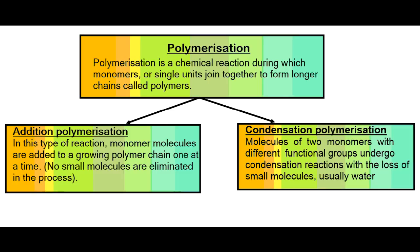There are two types of polymerization: addition polymerization and condensation polymerization. In addition polymerization, monomer molecules — for example ethene — are added in a growing polymer chain one at a time and no small molecules are eliminated in the process. The molecules are added continuously to make large molecules.